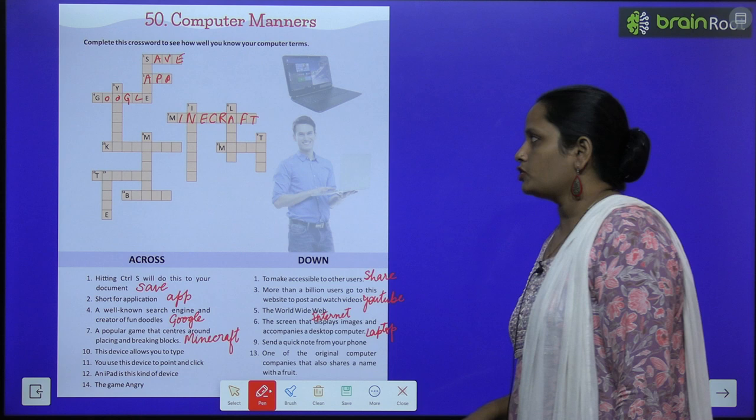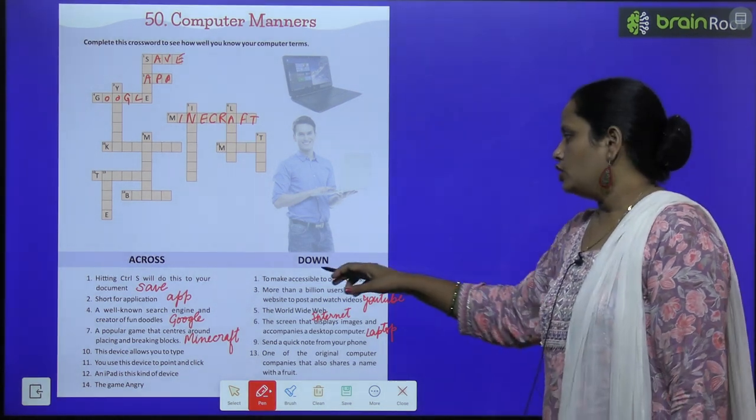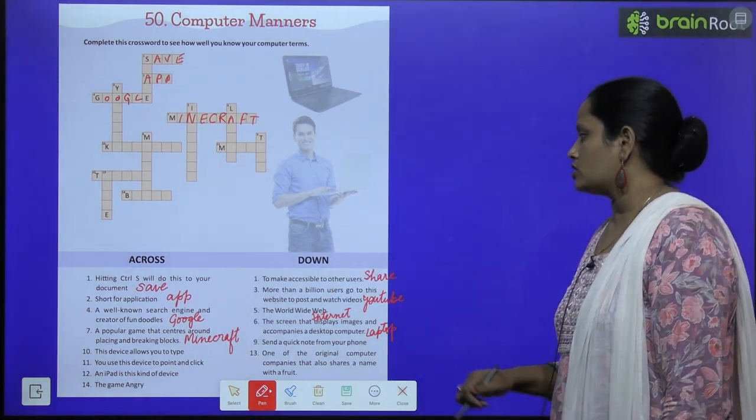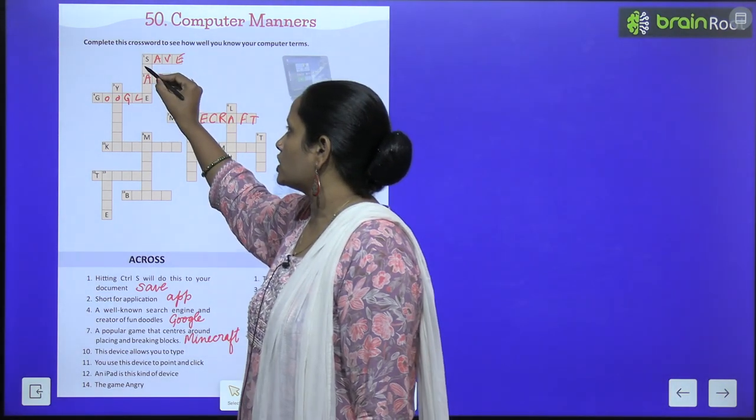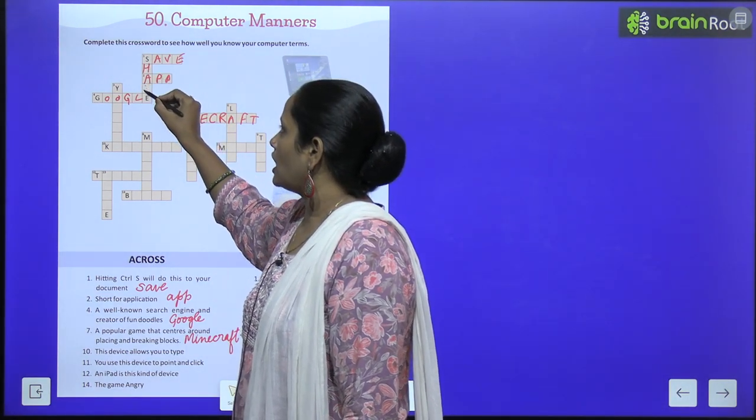Similarly, let's move on to the down column. To make accessible to other users. Doosro ko koji chiz bhoot aasani se mill jahe, usa keheten share. S H A R E.